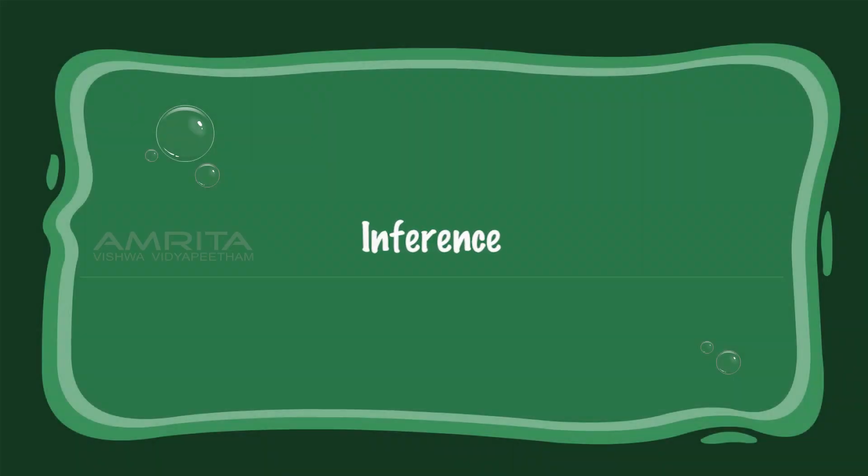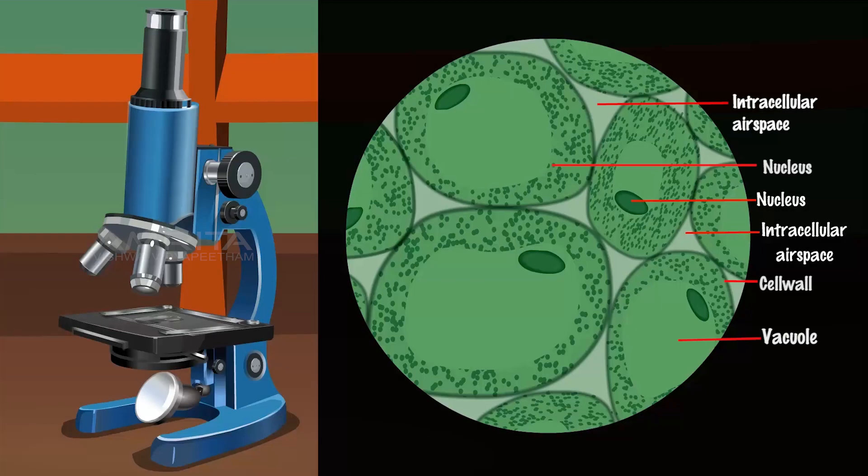Inference: As the cells have a thin cell wall, are isodiametric in shape, and have a large vacuole present in the cytoplasm, we can confirm that the tissue seen on the slide is a parenchyma tissue.